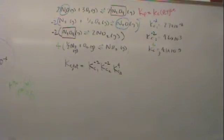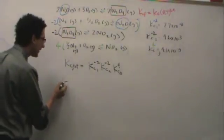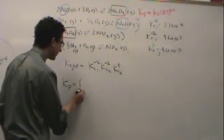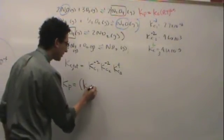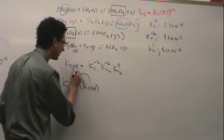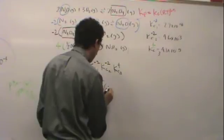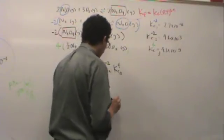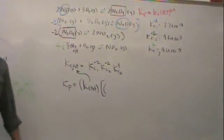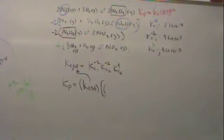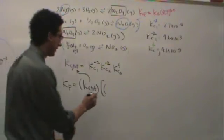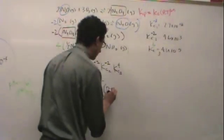But I'm not done yet. Kp, which is what they wanted, is Kc total from right here times R. Which R am I going to use? 0.0820. Why am I going to use this one?